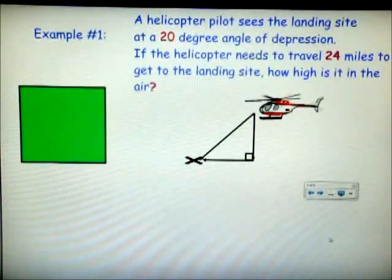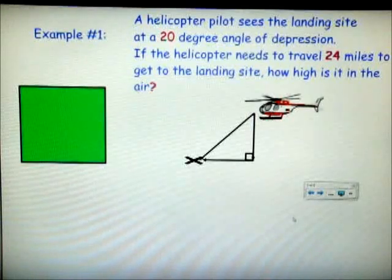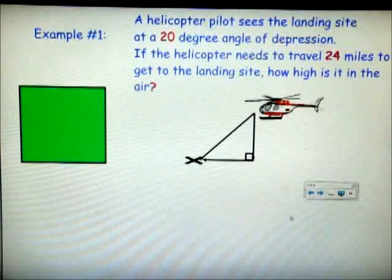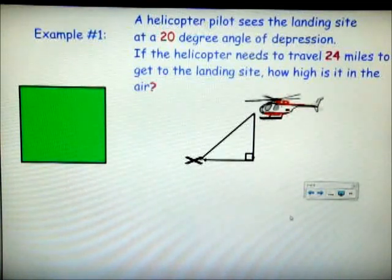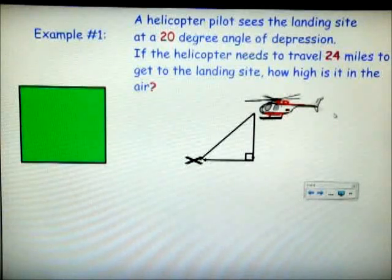We're going to go through a couple examples together, and we're going to use what we already know about trig. So taking a look at the first example, before we begin, you do want to make sure your calculator mode is in degrees. The problem says a helicopter pilot sees the landing site at a 20-degree angle of depression. If the helicopter needs to travel 24 miles to get to the landing site, how high is it in the air?